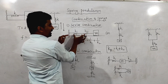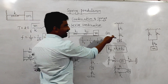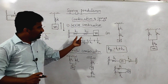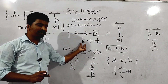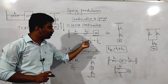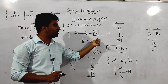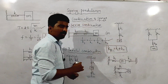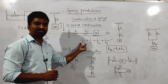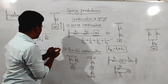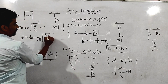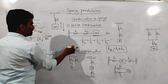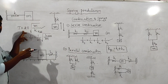For combinations of springs: in a series combination (end-to-end attachment), with springs k1 and k2 connected to mass m, the effective spring constant is given by 1/k_s = 1/k1 + 1/k2. Substitute this effective spring constant into the time period formula.